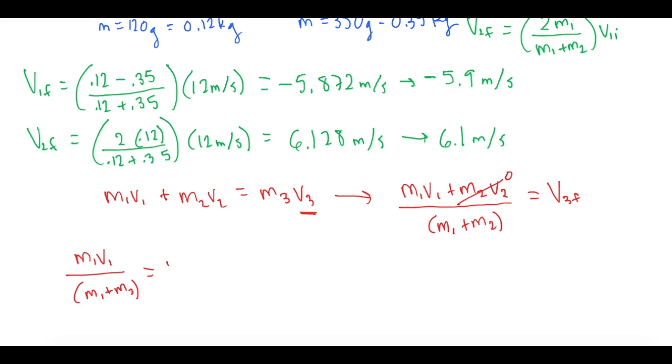m1 of course is 0.12 times its initial speed of 12 meters per second, divided by 0.12 plus 0.35. That gives us a final speed for both balls of 3.1 meters per second for ball 1 and 3.1 meters per second for ball 2.